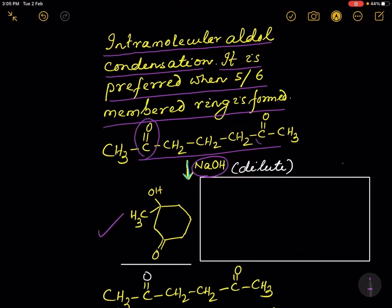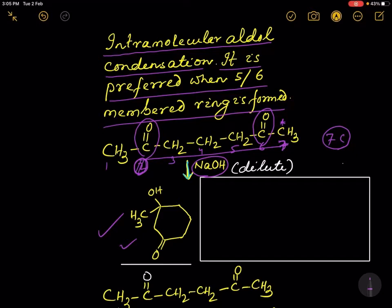This compound contains two carbonyl groups. Now we will develop a trick to find this compound. You see there are 1, 2, 3, 4, 5, 6, 7 — seven carbon atoms. This carbon number 7 will form a bond with number 2 carbon, so let us write number 2 carbon on the screen.